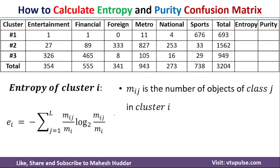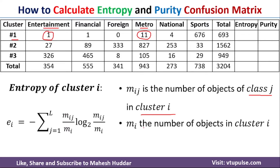M_IJ is the number of objects of class J in cluster I. For example, if you consider Entertainment as the class and Cluster 1 as the cluster, the number of objects of this class present in this cluster is 1. Another example: for Metro class in Cluster 1, 11 objects are present, so M_IJ equals 11. M_I is the number of objects in cluster I — the total number of objects in Cluster 1 is 693, in Cluster 2 it is 1562, and so on.